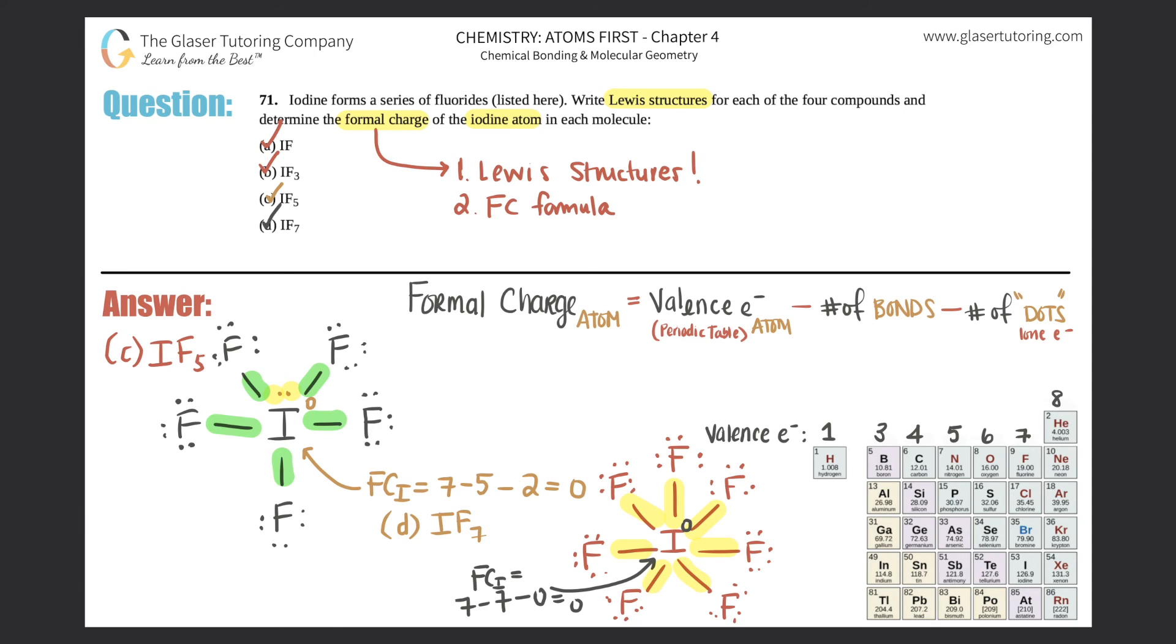That's crazy! So for all of these, every single iodine was neutral. And that's what you got to take home from this question: that there could be a lot of different ways that you could draw different elements, but they will still come out to be the same charge. And that's that, so 71 is done.